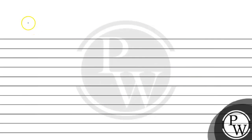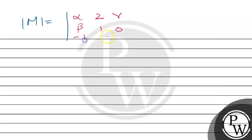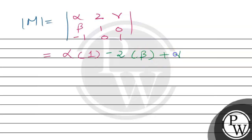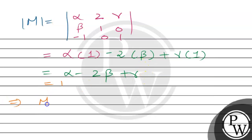Now we find the determinant of matrix M. Determinant of M equals the determinant of the matrix with elements alpha, 2, gamma, beta, 1, 0, minus 1, 0, 1. Expanding: alpha into (1 times 1 minus 0 times 0), minus 2 into (beta times 1 minus 0 times minus 1), plus gamma into (beta times 0 minus 1 times minus 1). This simplifies to alpha minus 2 beta plus gamma, which equals 1.